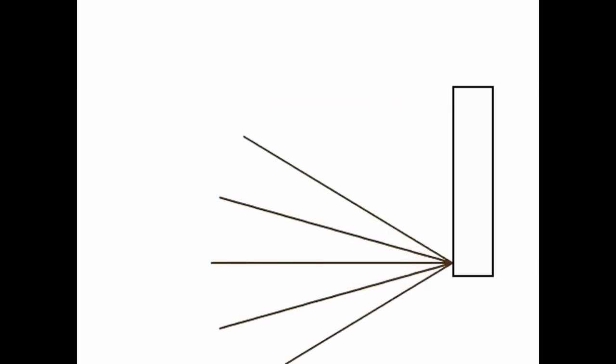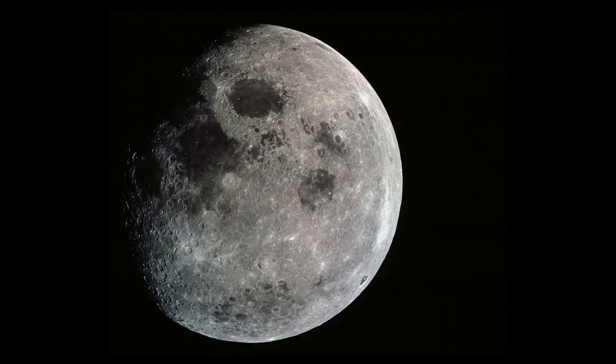If the moon were flat, then no matter what angle the light strikes it, it will reflect back the same way and the brightness will be uniform from one edge to the other. But the moon is not flat.